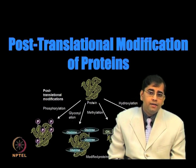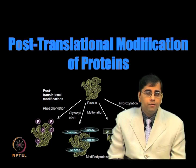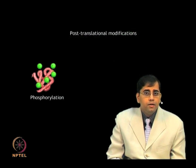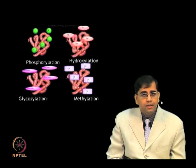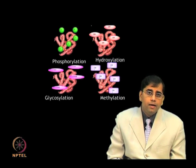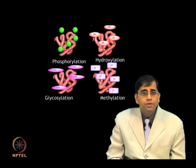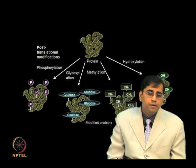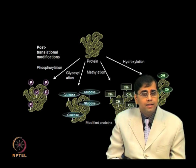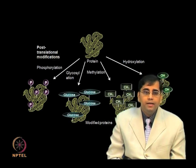A third important factor is post-translational modification of proteins. The proteins obtained by translation undergo folding and various post-translational modifications such as phosphorylation, glycosylation, alkylation, and hydroxylation. The PTMs generate diversity, complexity, and heterogeneity of gene products, and their functional consequences can include modulation of protein dynamics and alteration of functional activity.